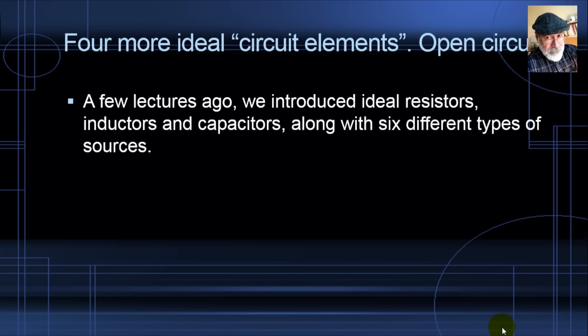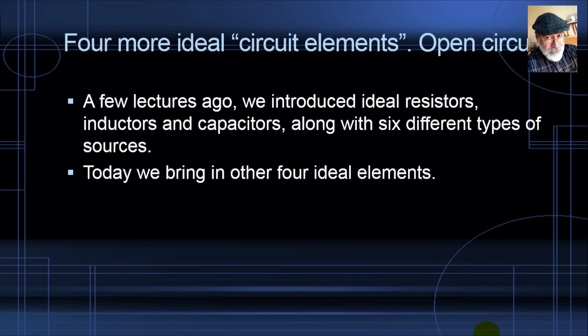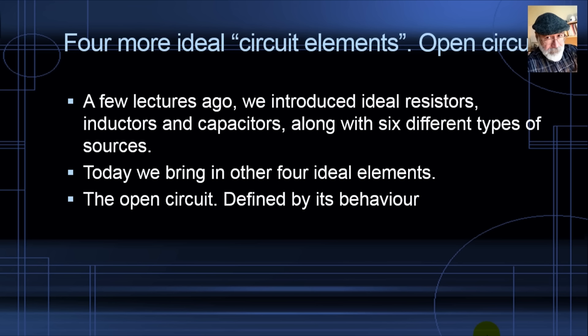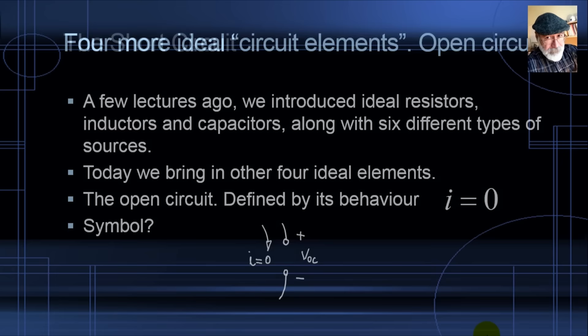Now we introduce four more ideal circuit elements. The first one is the open circuit. An open circuit is defined by its behavior: its current is zero at all times. The symbol is just a hole in the branch. The voltage across the open circuit is what we call the open circuit voltage, VOC.